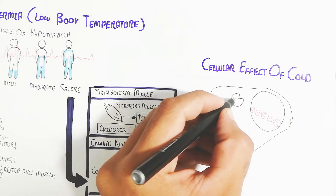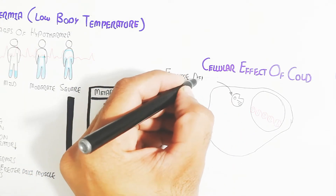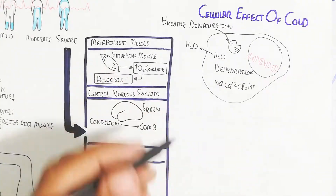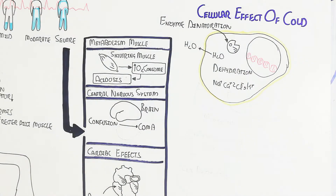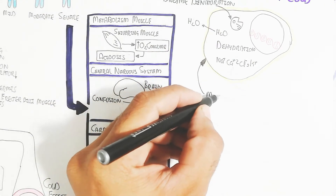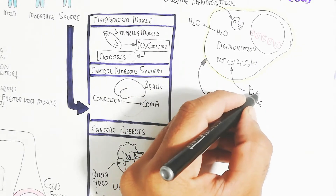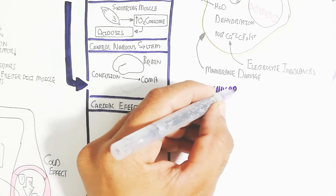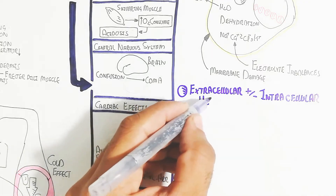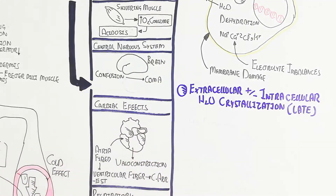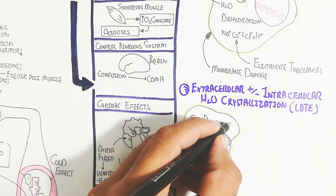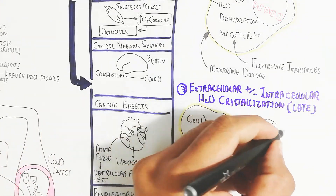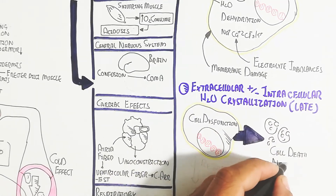At the cellular level, cold causes enzyme denaturation because optimal temperature is not available. Cells shrink due to constriction, releasing water and causing dehydration. Electrolytes — sodium, calcium, chloride, and potassium — become imbalanced, damaging the cell membrane. Extracellular ionic imbalances lead to intracellular water crystallization, resulting in cell dysfunction and cell death known as necrosis — an injury-induced death, not programmed apoptosis.